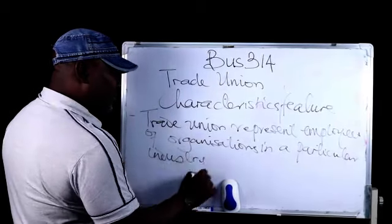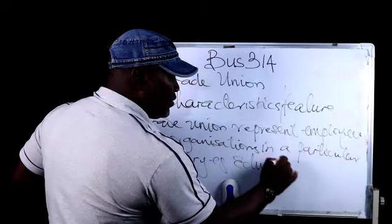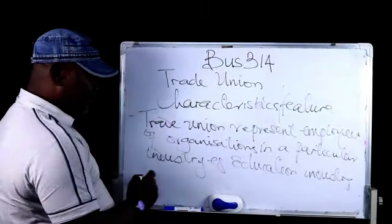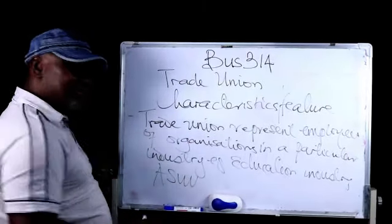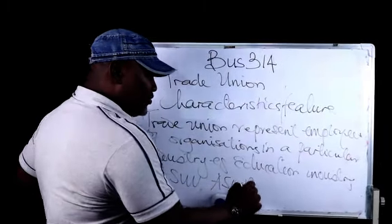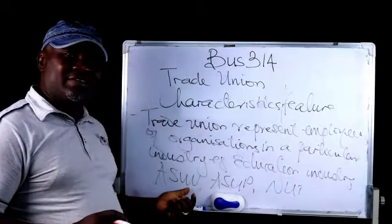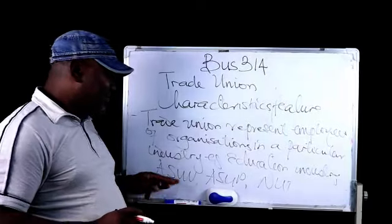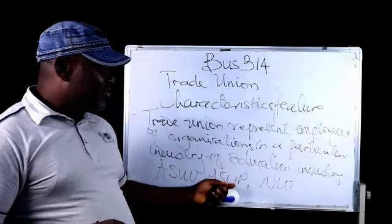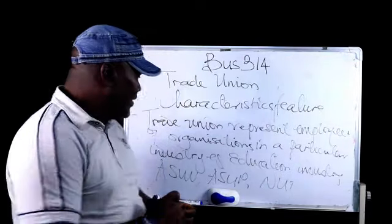When we talk about a particular industry, for example, in the educational industry in Nigeria, we have trade unions like ASUU, which stands for Academic Staff Union of Universities, representing all academic staff in Nigerian universities. We also have ASUP, which covers academic staff in Nigerian Polytechnics, and NUT, which is the Nigerian Union of Teachers, representing the interests of all teachers in Nigeria.